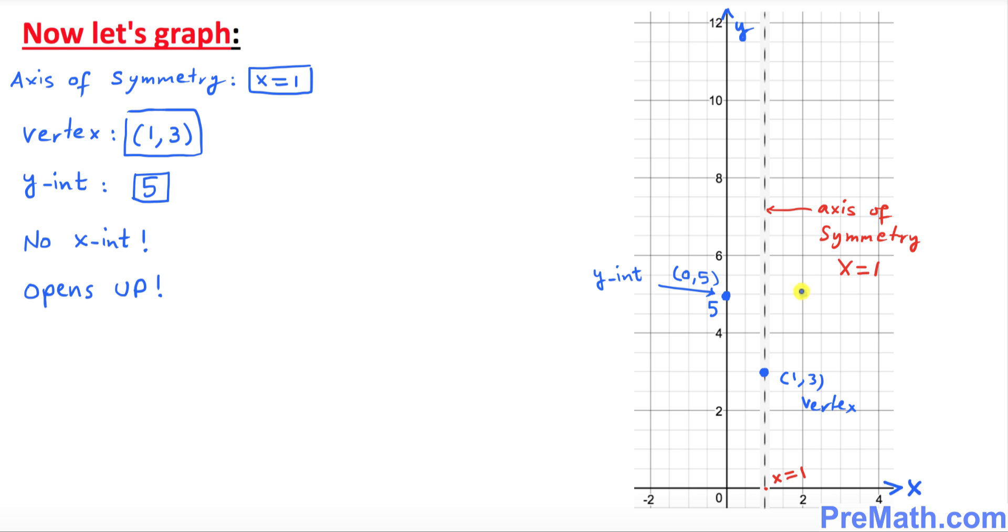It's going to show up on this side. That's going to be the other point, and that point is going to be (2, 5).